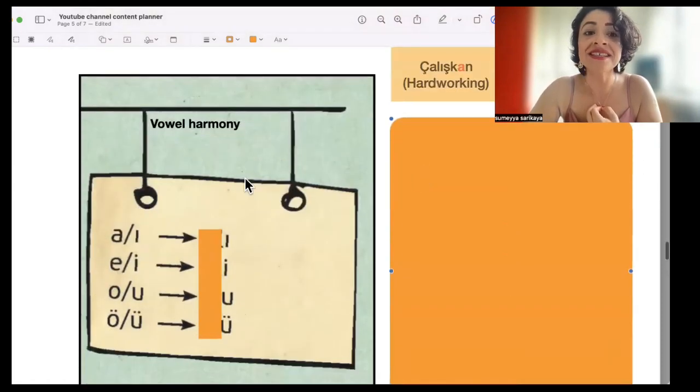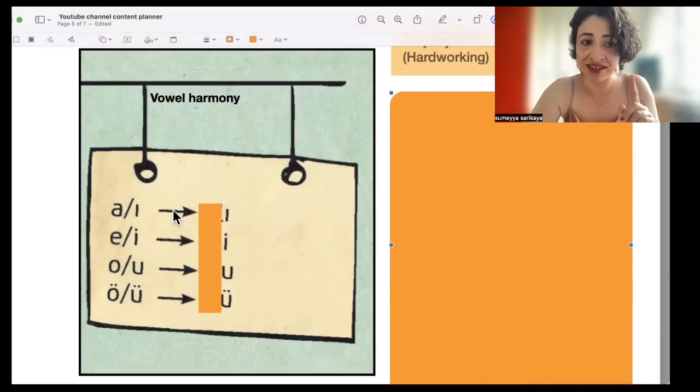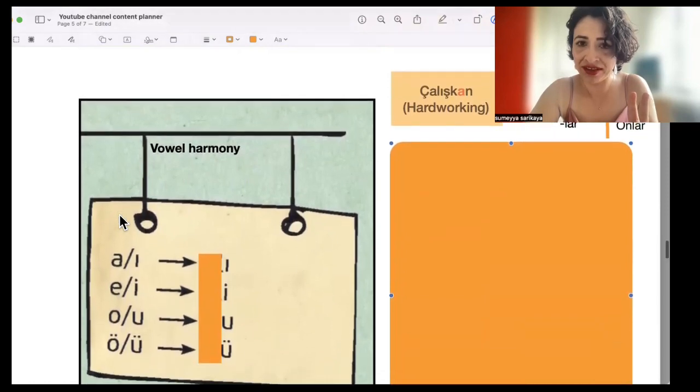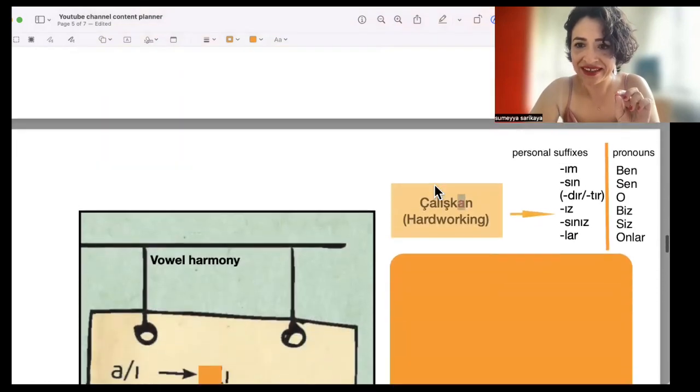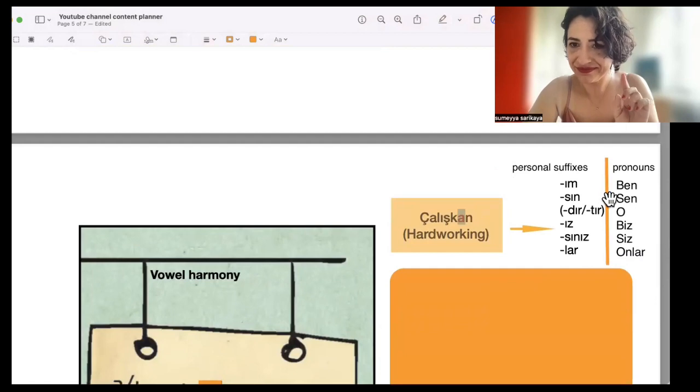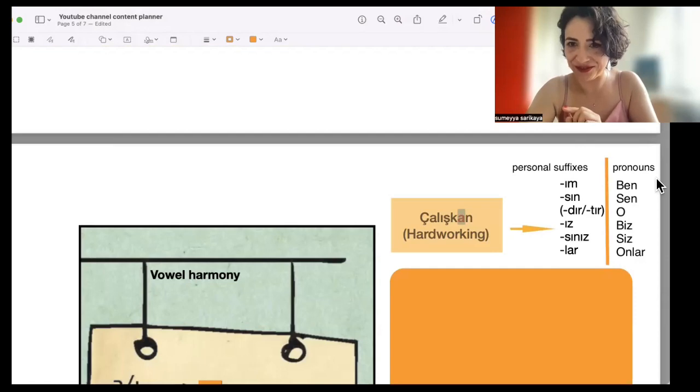So here is a table of all the vowels in Turkish. If the ending vowel of a word is a or ı, as an example here, çalışkan, the ending vowel is a, then we will choose the personal suffix that contains ı vowel. Here you see there are four vowel selections, so you choose the one with ı. What happens when we speak it for each personal pronoun? Let's do it.